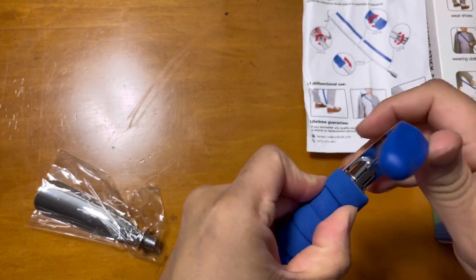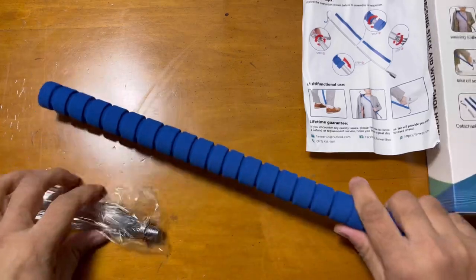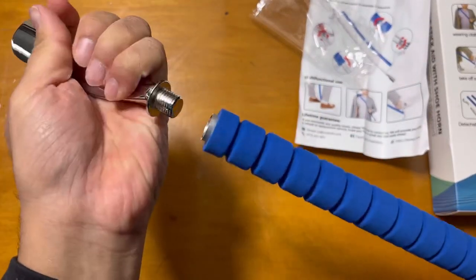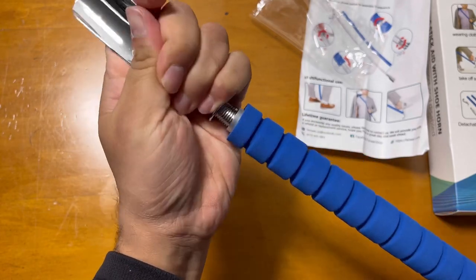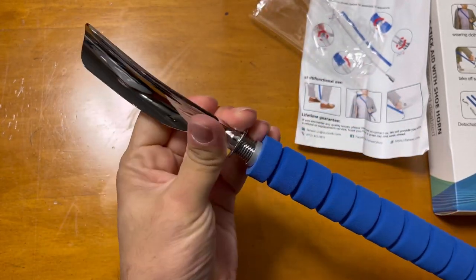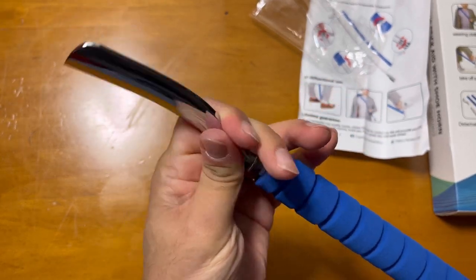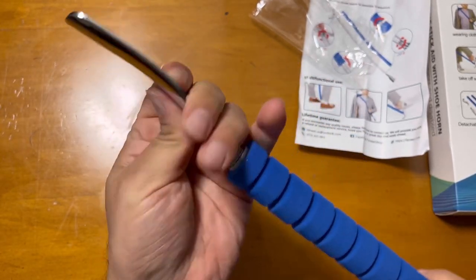Then once you fix that, the other side is for the shoe wearing. Same thing - just push a little bit and start rotating it, and it will just go in place.